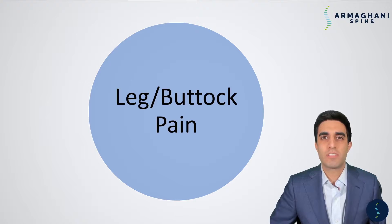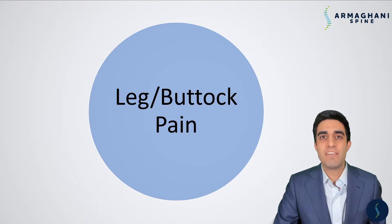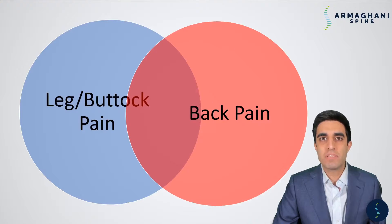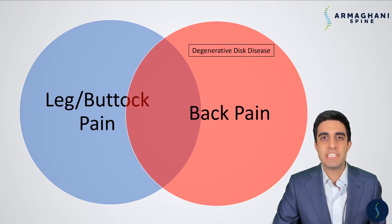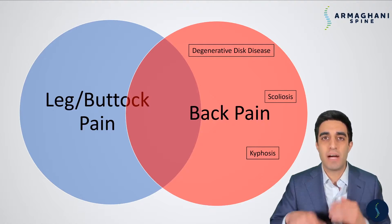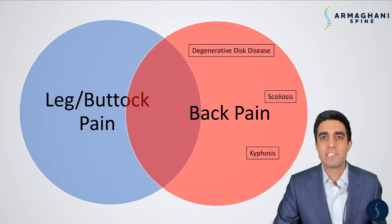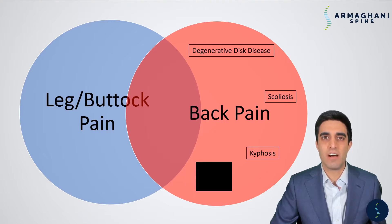When surgeons are trying to think about the different causes of a patient's particular issue, we try to think of the location in which it occurs. Patients can have discomfort or pain in their leg or buttock area, just their back, or sometimes a combination of both. Conditions that can cause purely back pain include degenerative disc disease which happens with normal aging, scoliosis which is a curvature of the spine from side to side, kyphosis which is a curvature of the spine front to back, and then there's the unknown category which could be any number of reasons including muscle imbalances or arthritis of the joints.